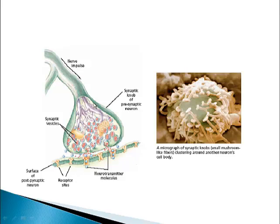We have the synaptic gap before we get to this dendrite. This neuron here, which is sending the information through its synaptic knob, is called the presynaptic neuron — 'pre' meaning before, it's before the synapse. This dendrite that's receiving the information is called the postsynaptic neuron. This whole area where the synaptic knob is getting near the dendrite is called the synapse. Inside the cell wall of this dendrite are channels called receptor sites — neurotransmitter receptors.